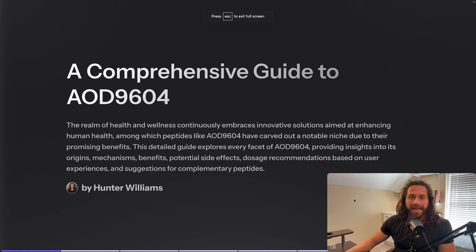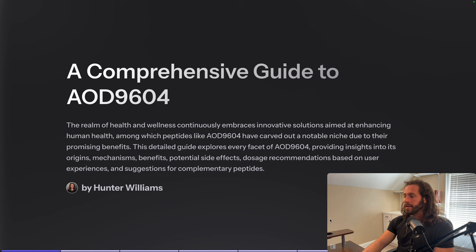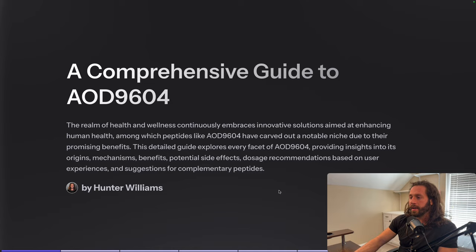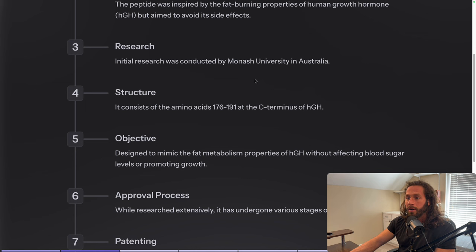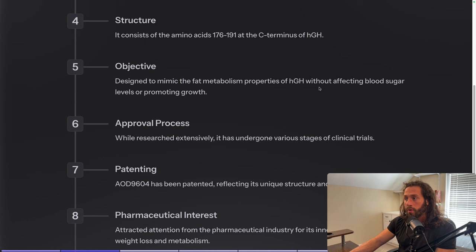This is a comprehensive overview of AOD 9604. We're going to talk about the origin, mechanisms, benefits, side effects, dosage, and some peptides I'd recommend stacking with AOD. So, AOD 9604 — which stands for anti-obesity drug 9604 — was developed as a fragment of the human growth hormone amino acid chain. It was originally researched by Monash University in Australia, and it consists of amino acids 176 to 191 at the C-terminus of HGH.